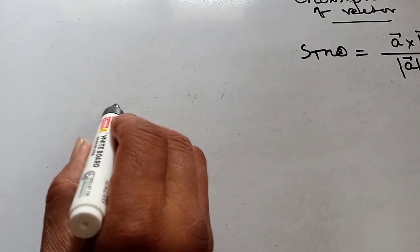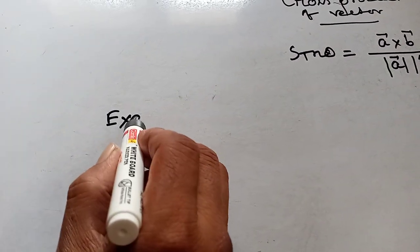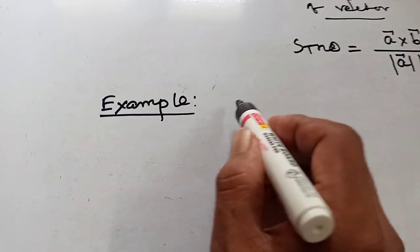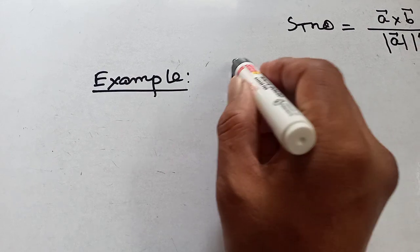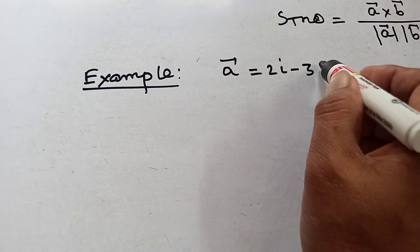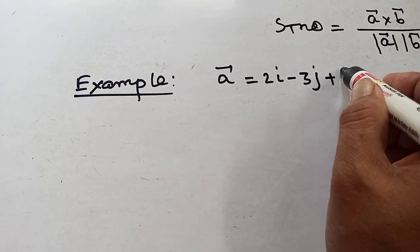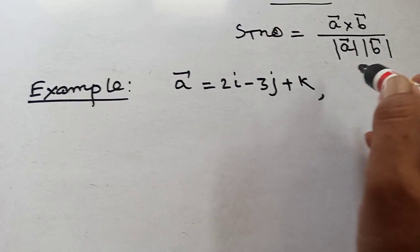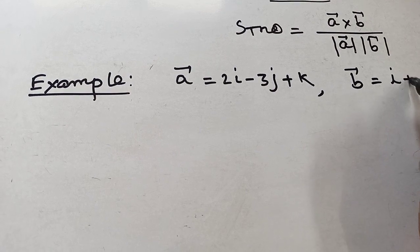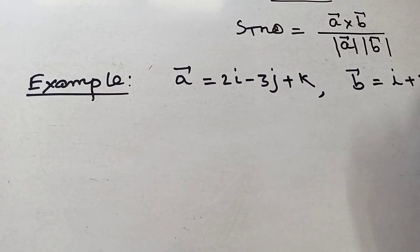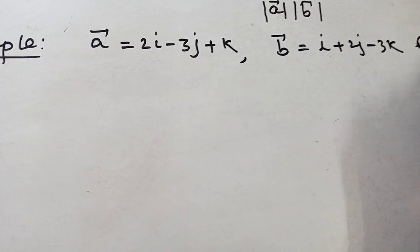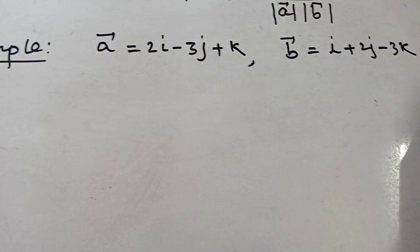Example: a is a vector 2i minus 3j plus k. b is another vector i plus 2j minus 3k. Find a cross b.